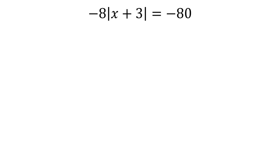We have negative 8 times the absolute value of x plus 3 is equal to negative 80. Don't get confused here — there is a solution to this problem. We do have a negative number on the right-hand side of our equation, but once we do a little bit of algebra, it will be cleared away.